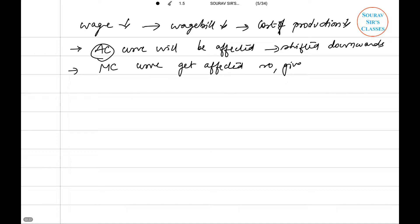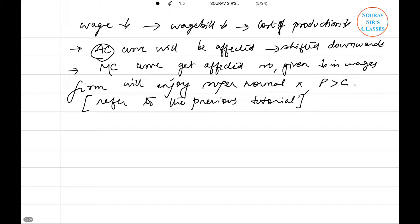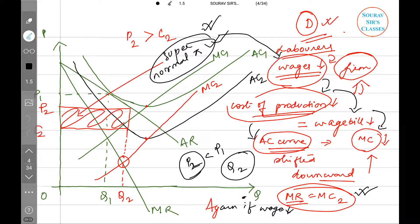Given reduction in wages, this particular firm will enjoy supernormal profit, because price will be greater than average cost. If you want the diagram you can refer to the previous tutorial on this particular question. Now let us move on to the last question.